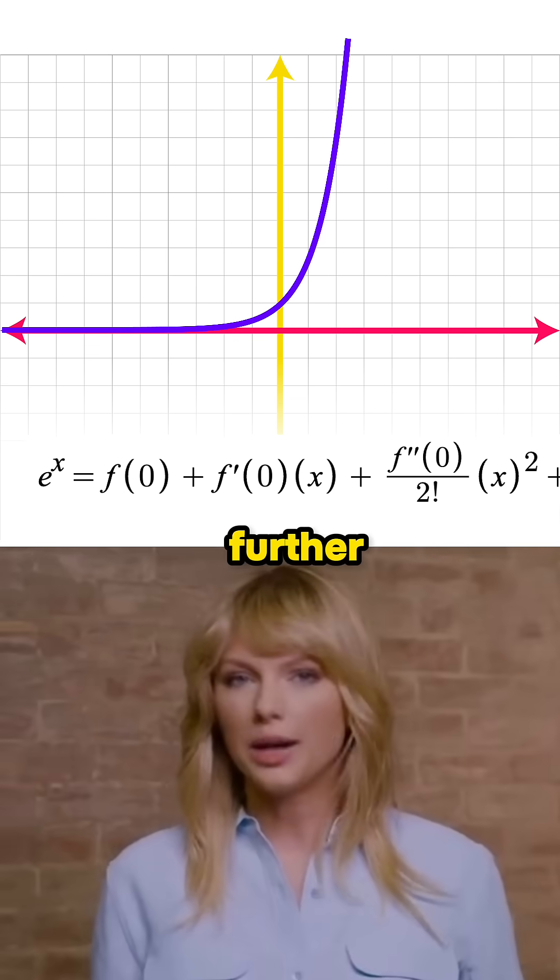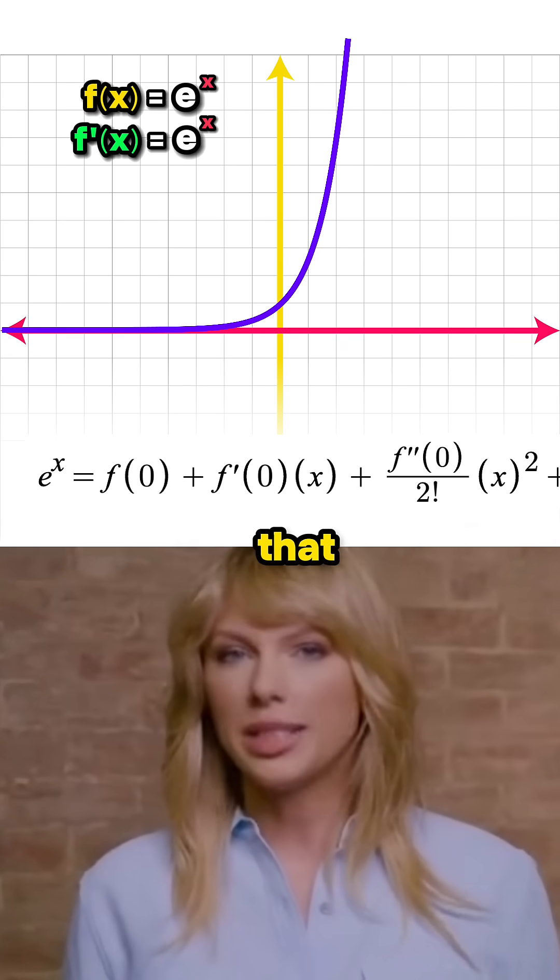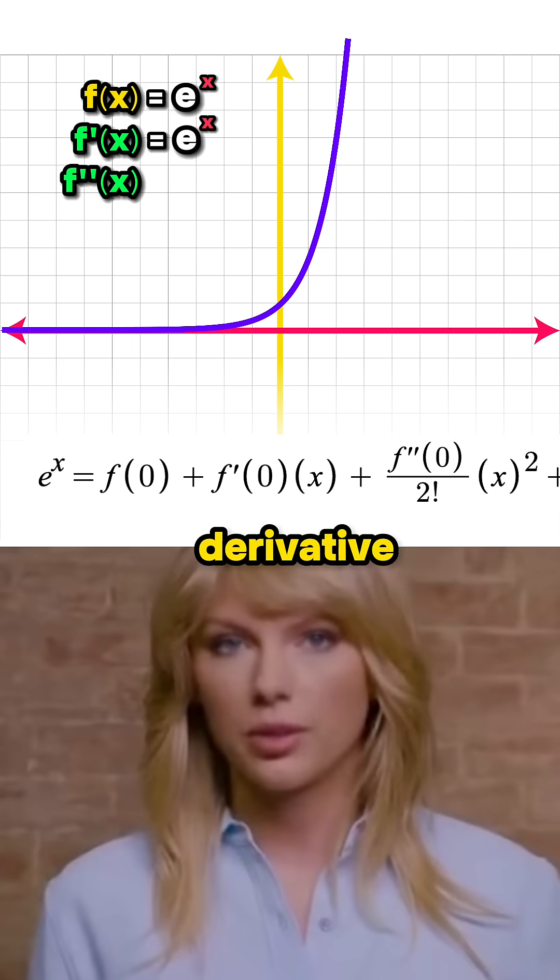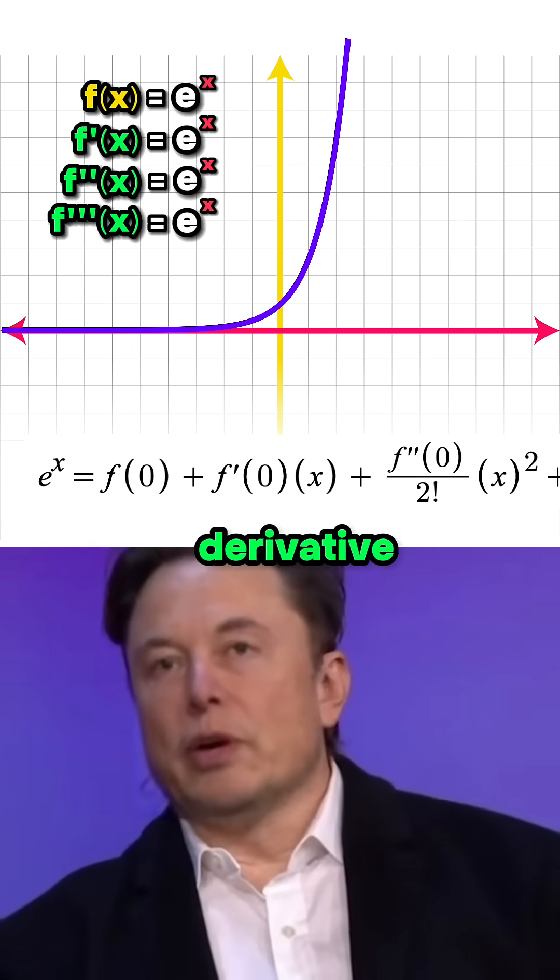Now before we go any further, remember the derivative of e to the x is also e to the x. This means that the second derivative, which is the derivative of the first derivative, will also be e to the x. And so will the third derivative, fourth derivative,